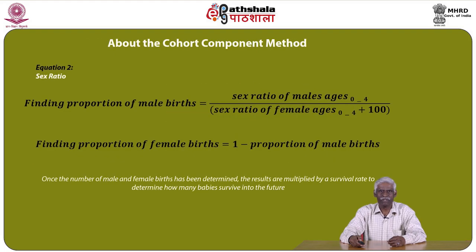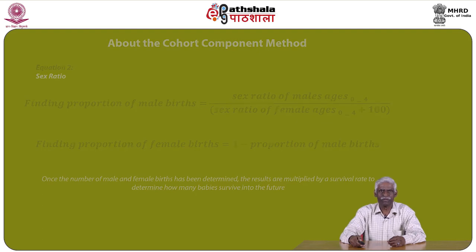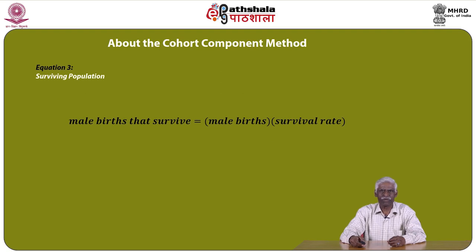The second equation focuses on sex ratio. Finding the proportion of male births is equal to the sex ratio of males ages 0 to 4 divided by the sex ratio of females ages 0 to 4, plus 100. The proportion of female births is equal to 1 minus the proportion of male births. Once the number of male and female births have been determined, the results are multiplied by the survival rate to determine how many babies survive into the future. The third equation states that male births that survive equals male births multiplied by the survival rate.